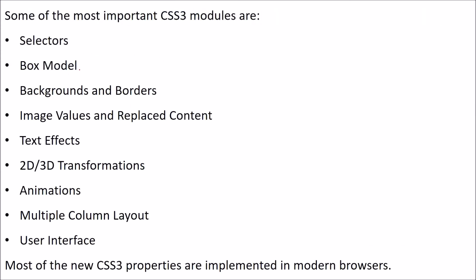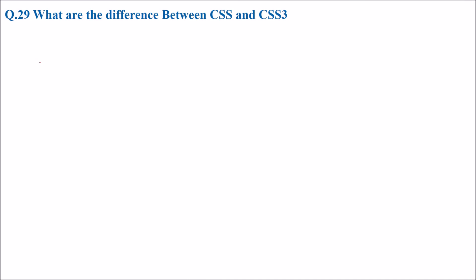Important CSS3 modules include selectors, box models, backgrounds and borders, image values and replaced content, text effects, font types, 2D and 3D transformation, animation, multiple column layout, user interface, and many more. Most new CSS properties are implemented in more and more browsers.